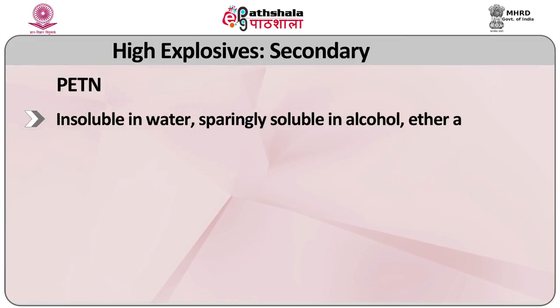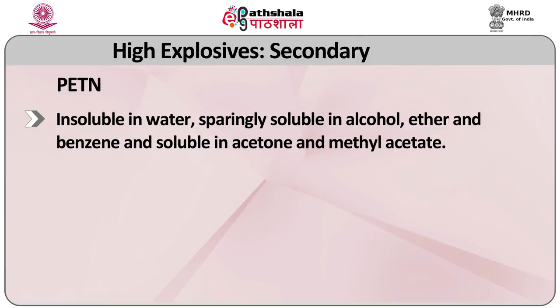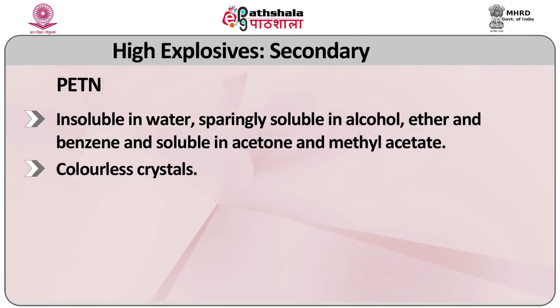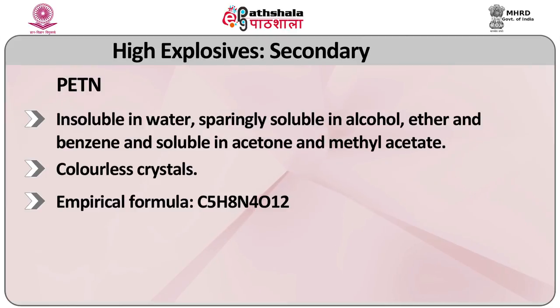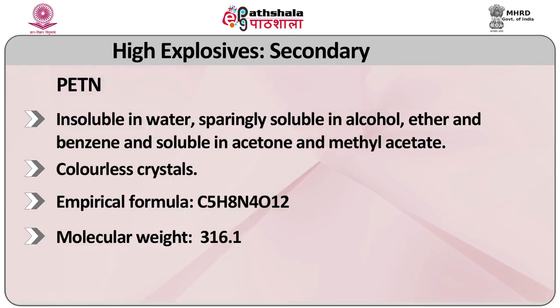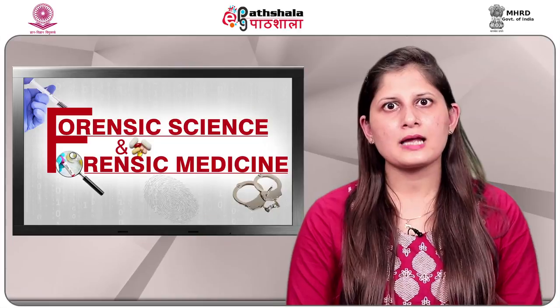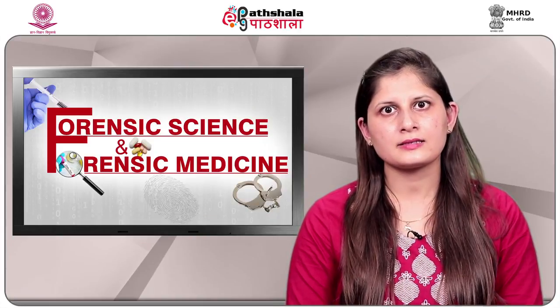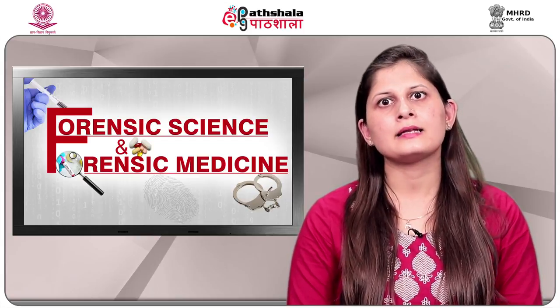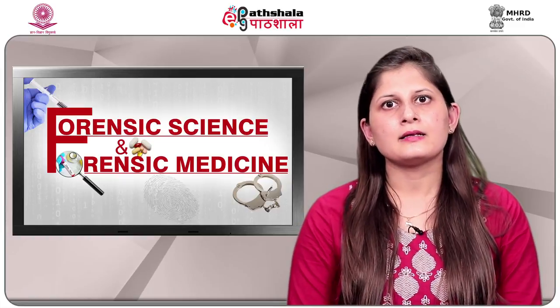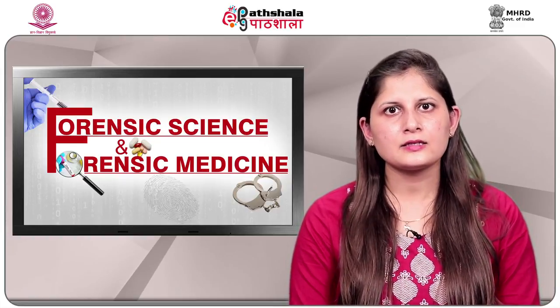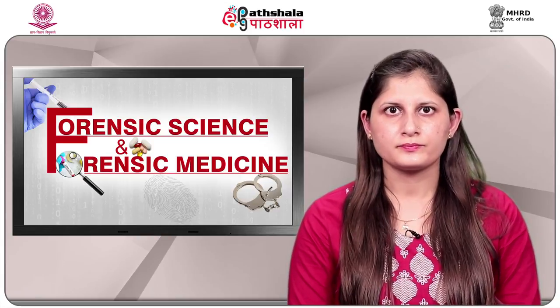PETN stands for pentaerythritol tetranitrate. It is insoluble in water; sparingly soluble in alcohol, ether, and benzene; and soluble in acetone and methyl acetate. It is colorless and crystalline in nature. Empirical formula is C5H8N4O12. Molecular weight is 316.1. It is used as a base charge in blasting caps and detonators, as an explosive in detonating cord, in booster charges, in plastic explosives, and as an ingredient in other explosives. PETN is highly stable and is considered more stable than all other nitrate esters.